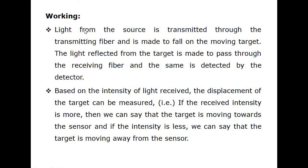The light from the source is transmitted through the transmitting fiber and made to fall on the moving target. The light reflected from the target passes through the receiving fiber and is detected by the detector circuit. Based on the intensity of light received, the displacement of the target is measured. If the received intensity is more, the target is moving towards the sensor; if intensity is less, the target is moving away from the sensor.